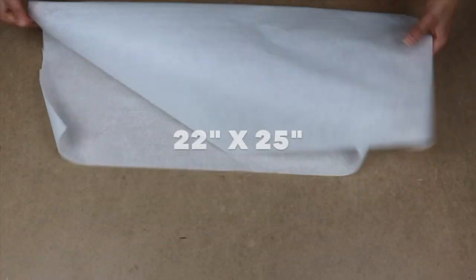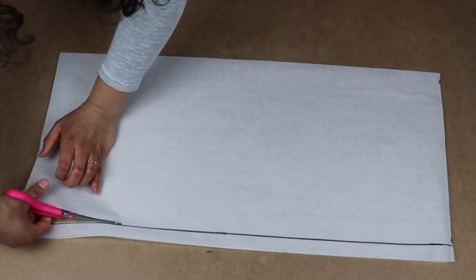The next step: create a 22 by 25 inch rectangle. I created mine by folding the paper in half and measuring 25 inch length by 11 inch half width.